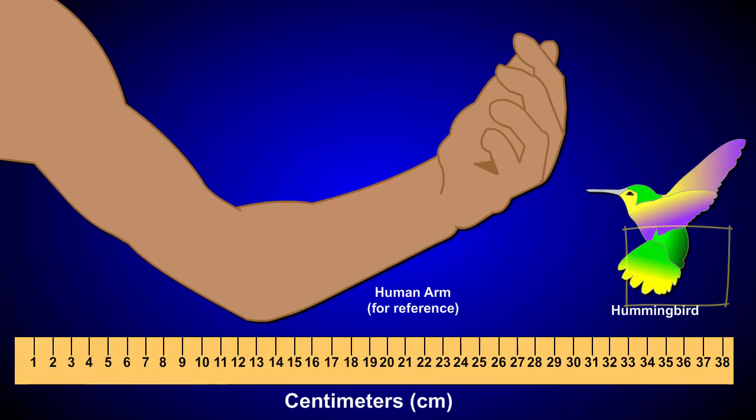To get a better idea of the scale of a centimeter, let's zoom into this hummingbird. Notice that the measurement scale has changed to centimeters. A common size for hummingbirds is about 8 centimeters in length.